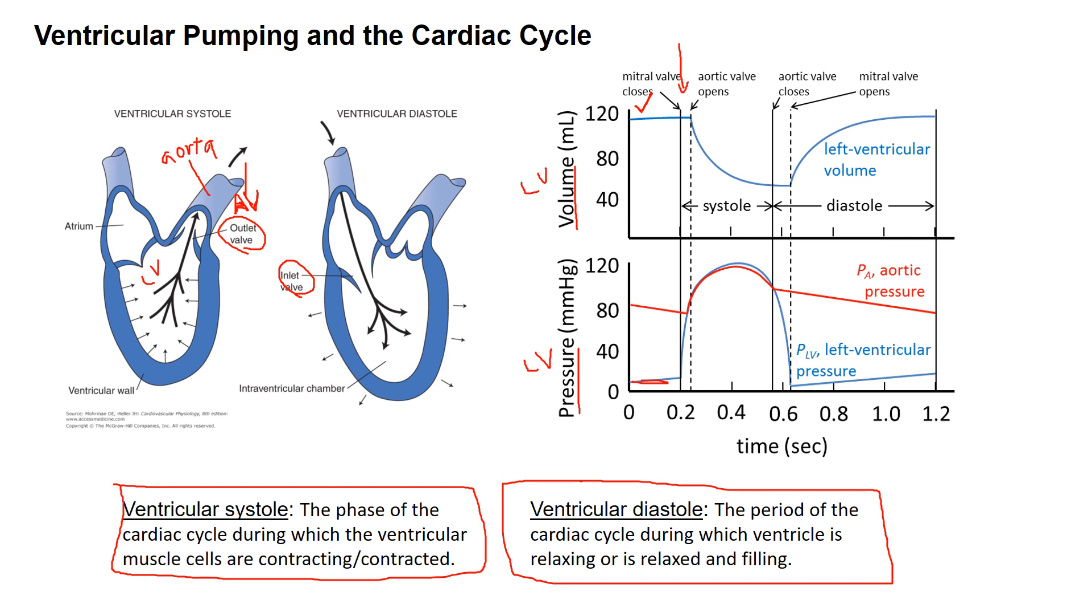Pressure increases in the left ventricle. The pressure increase immediately causes the mitral valve to close because the pressure is higher in the left ventricle than in the atrium. When the pressure gets higher than the aortic pressure, the aortic valve opens and volume in the chamber starts to go down even while the pressure continues to rise. See here how the volume goes down during this part of systole.